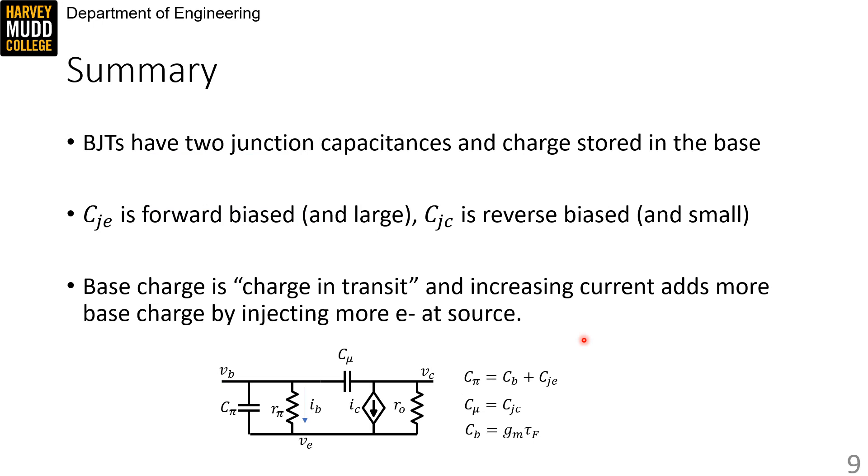So in summary, BJTs have two junction capacitances and an additional capacitance that's formed by charge stored in the base.